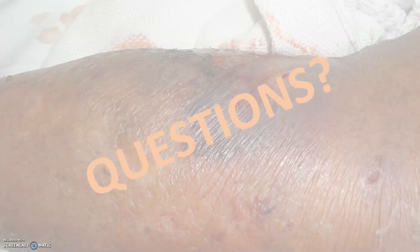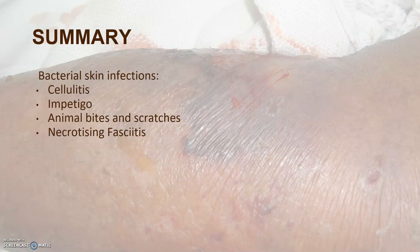That was a brief run through the organisms that cause bacterial skin infections. If you have any questions or queries, you can bring them up in class. In summary, we talked about cellulitis and impetigo, animal bites and scratches, and necrotizing fasciitis. Thanks for listening — I hope you found this useful.